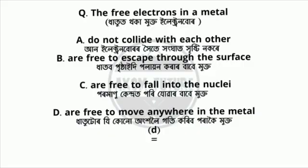Free electrons in a metal are free to move anywhere in a metal.